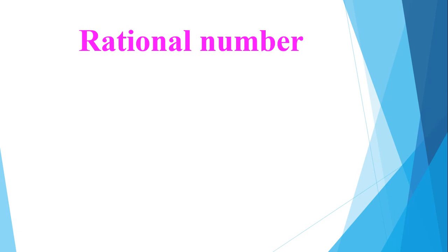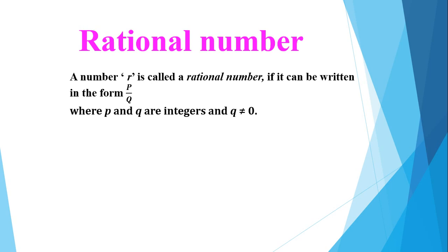What is a rational number? A number R is called a rational number if it can be written in the form P by Q, where P and Q are integers and Q is not equal to zero.